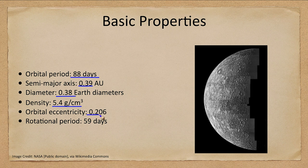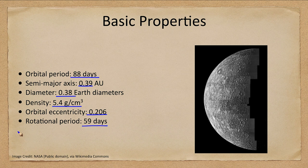It has an eccentricity of 0.2, the largest eccentricity among the planets in the solar system. So it has a very elliptical orbit, meaning sometimes it's close to the Sun and sometimes it's further away — much more so than Earth. Its rotational period, how long it takes to spin on its axis, would be 59 Earth days.